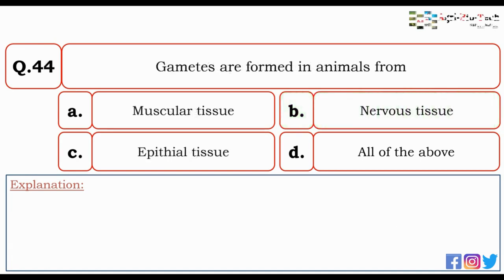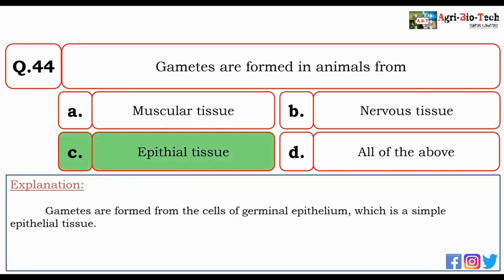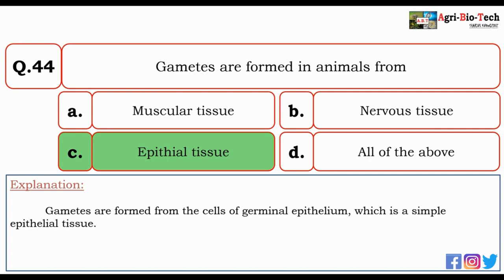Next question: gametes are formed in animals from — muscular tissue, nervous tissue, epithelial tissue, or all of the above? The correct option is C — epithelial tissue. Gametes are formed from the cells of germinal epithelium, which is a simple epithelial tissue.